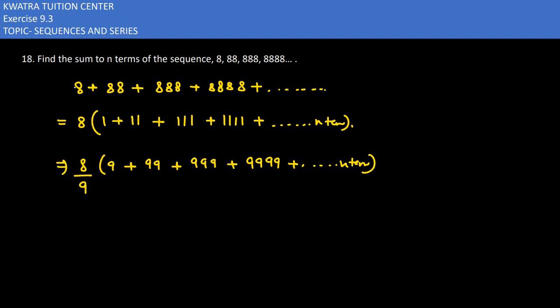Now this is our situation. What we have to do is take the common. We write it as 10 minus 1, 100 minus 1, 1000 minus 1, 10000 minus 1.